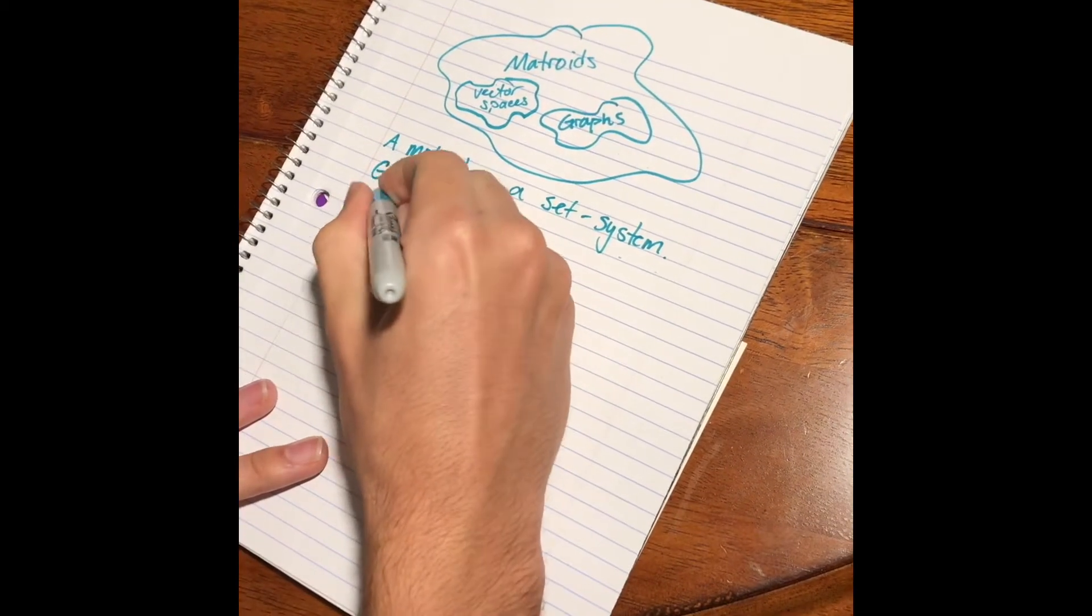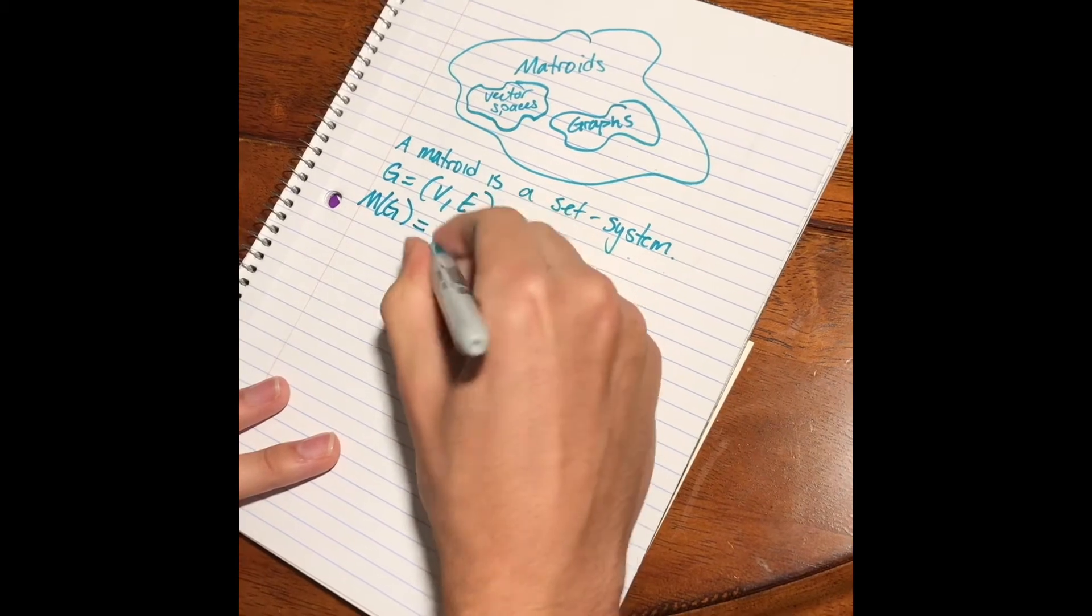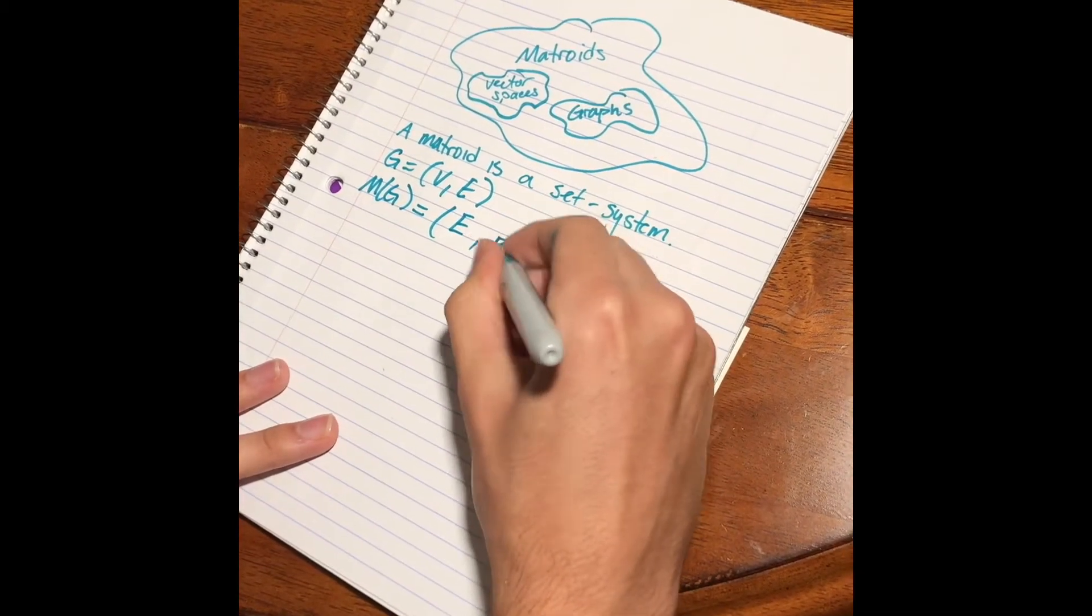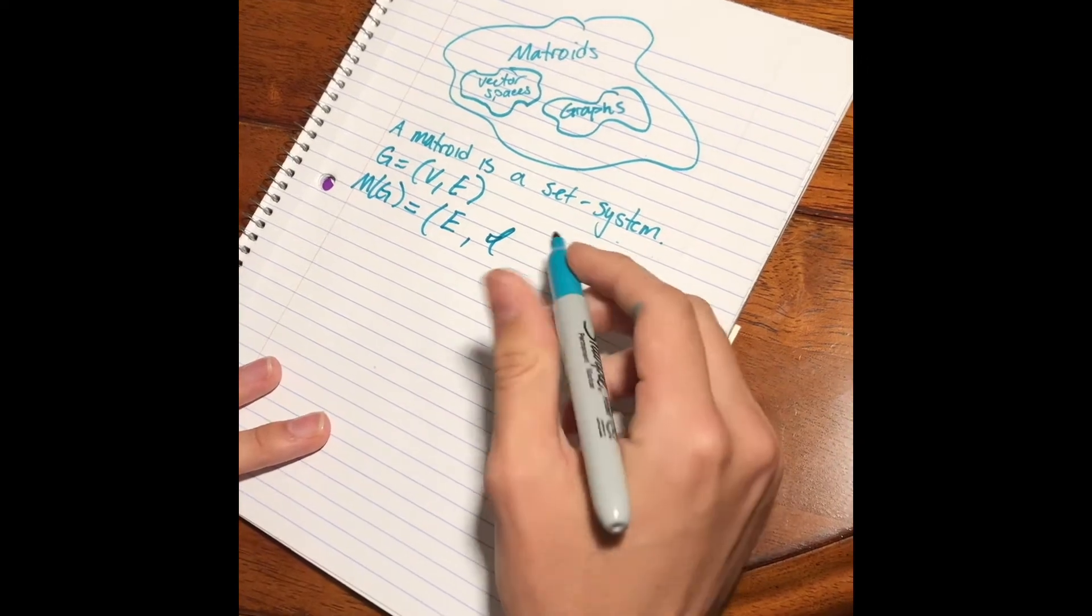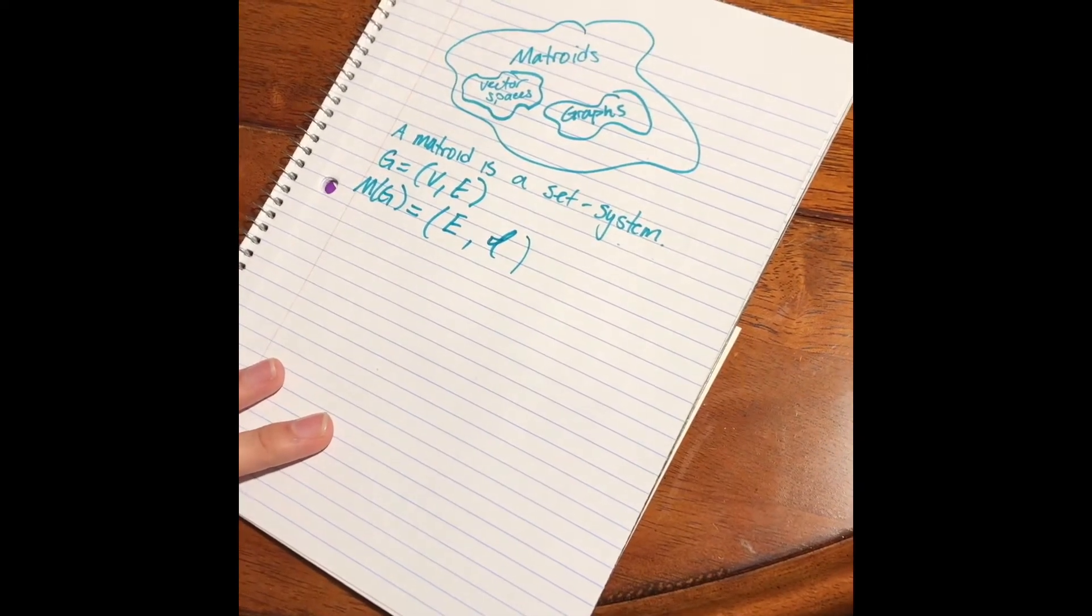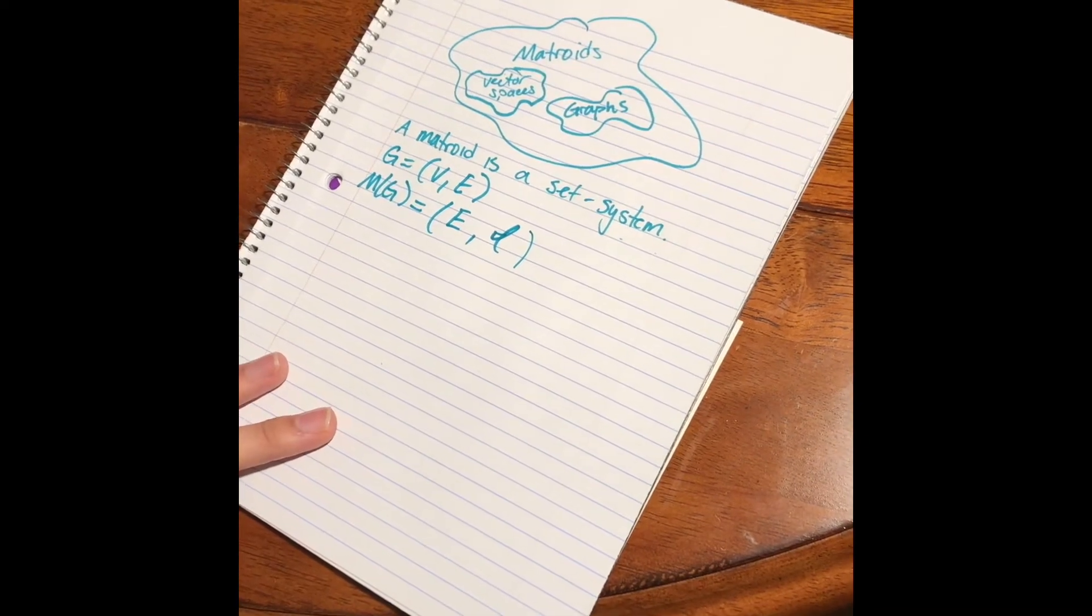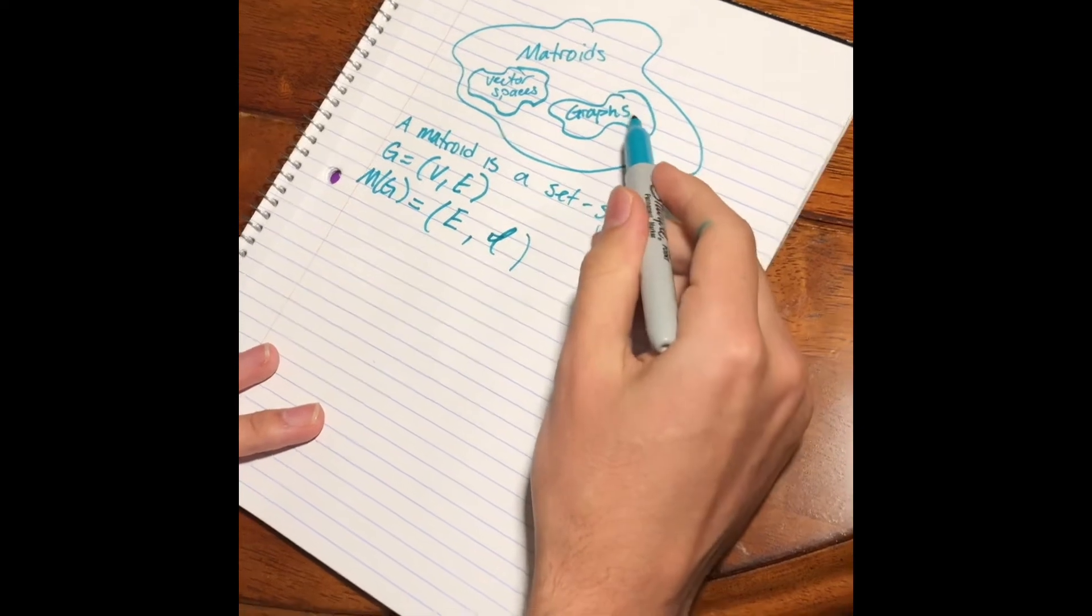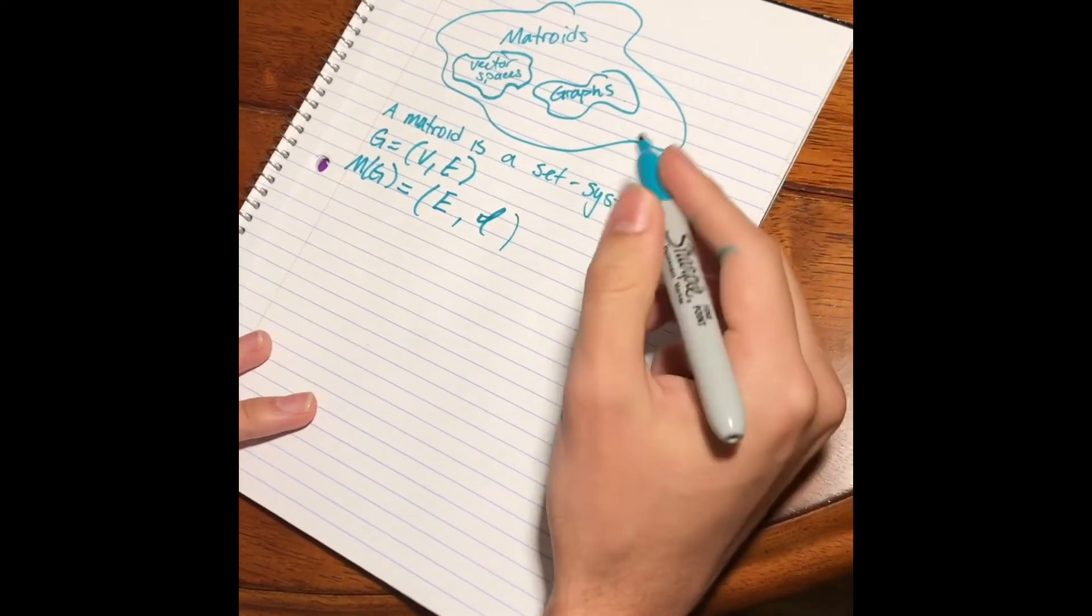A Matroid is a ground set labeled with E, and a family of sets, script I, that we call the independent sets of the Matroid. So, let's jump into the definition, and we're going to stick with Matroids that come from graphs, and those are called graphic Matroids.